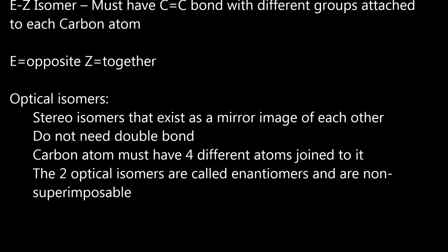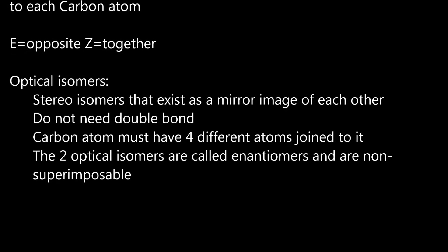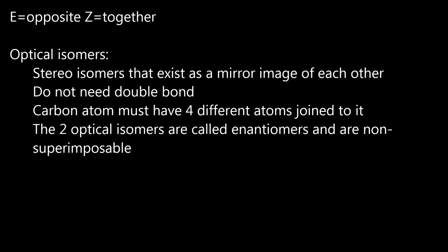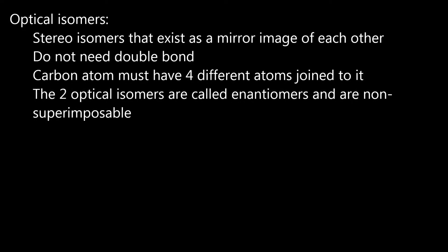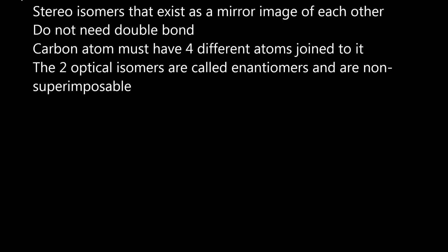Optical isomers are stereoisomers that exist as a mirror image of each other, do not need double bond, carbon atom must have four different atoms joined to it. The two optical isomers are called enantiomers and are non-superimposable.